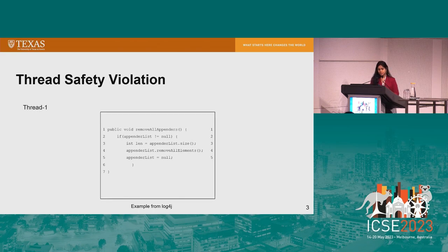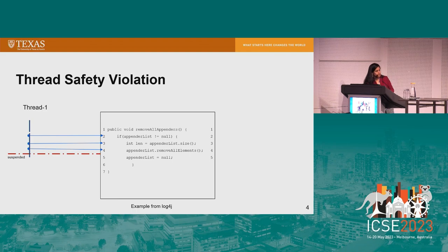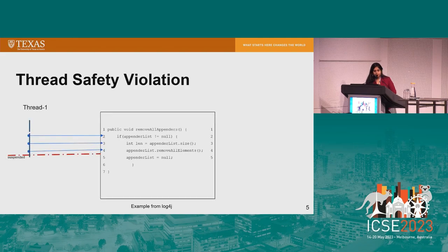Let's look at an example from a project log. Assume thread one executes the code block and lines two and three execute, then suspends. Thread two comes and tries to execute the same lines, getting the same values that thread one got. However, if thread one's execution is different, thread two can get different values for appender list size. If thread one suspends after line four, thread two will get appender list size as zero, because all elements were removed by thread one.